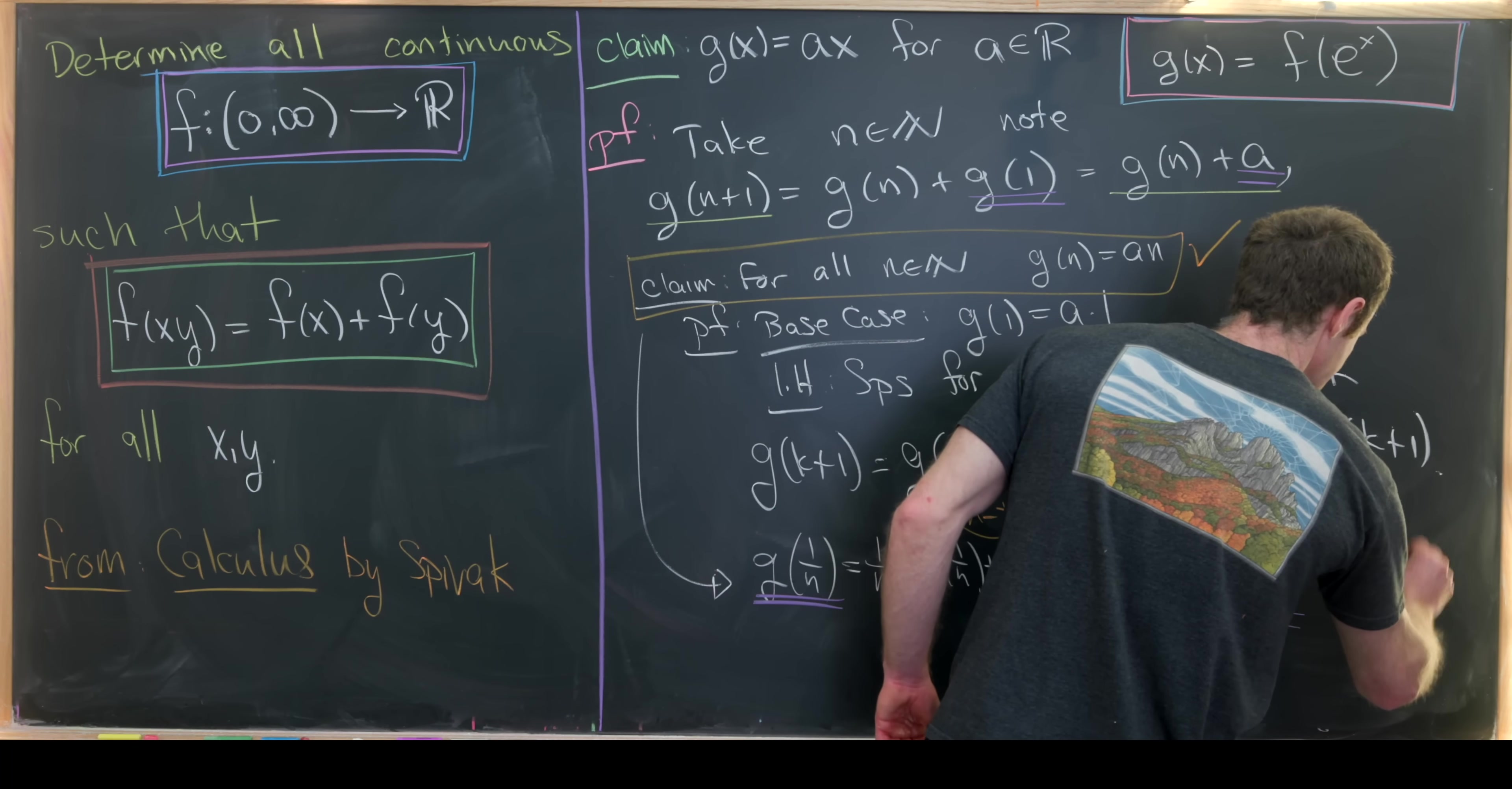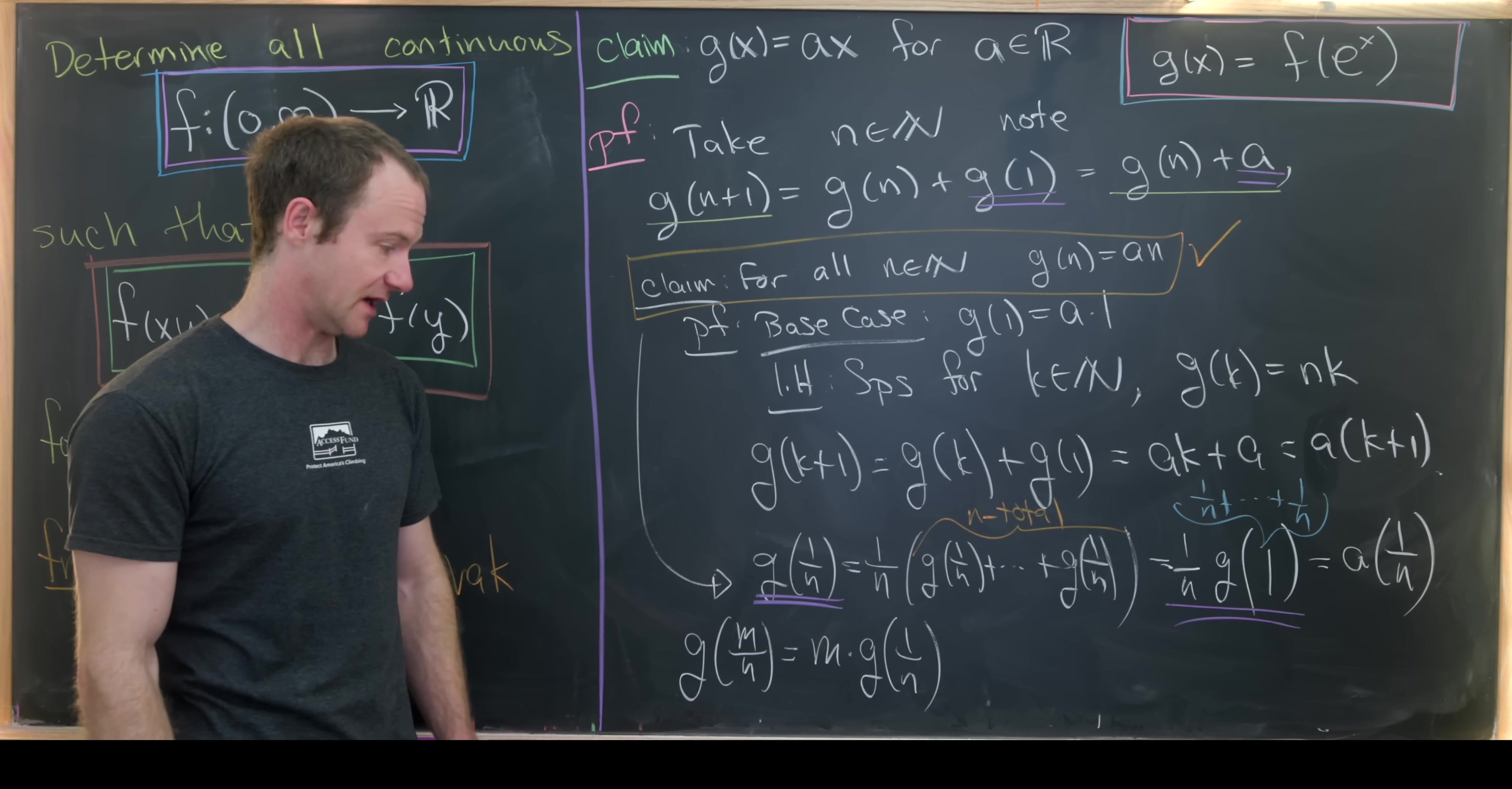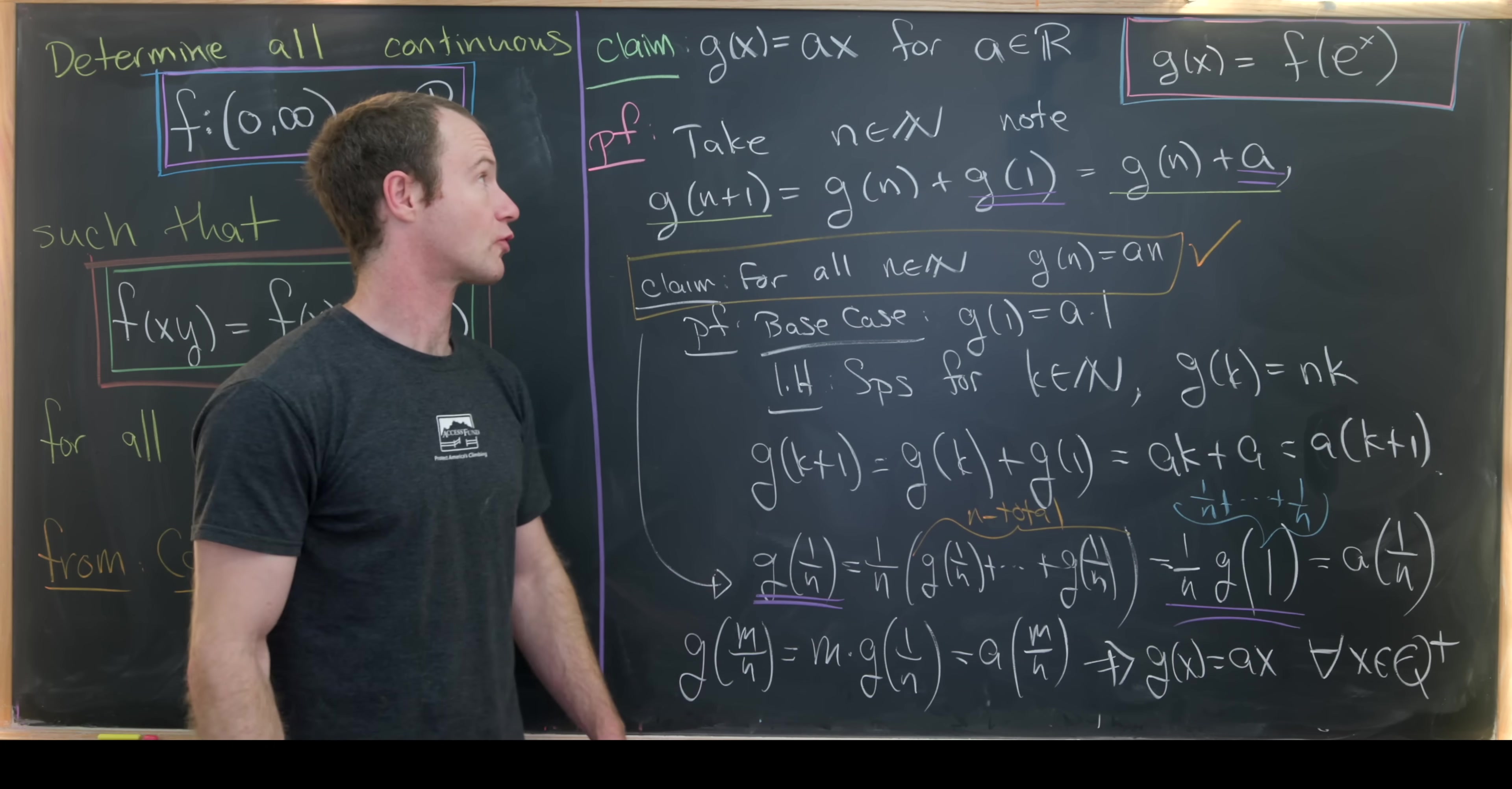And now we can play the same game with an arbitrary rational number. Let's take g(m/n). And we can write this as m times g(1/n). I skipped a little bit of a step here where I expanded this into g(1/n) added to itself m total times. But then g(1/n) is this a times 1/n. Putting things all together, we get a times m/n. So let's see where we are so far. At this moment, we see that g(x) equals a times x for all positive rational numbers x.